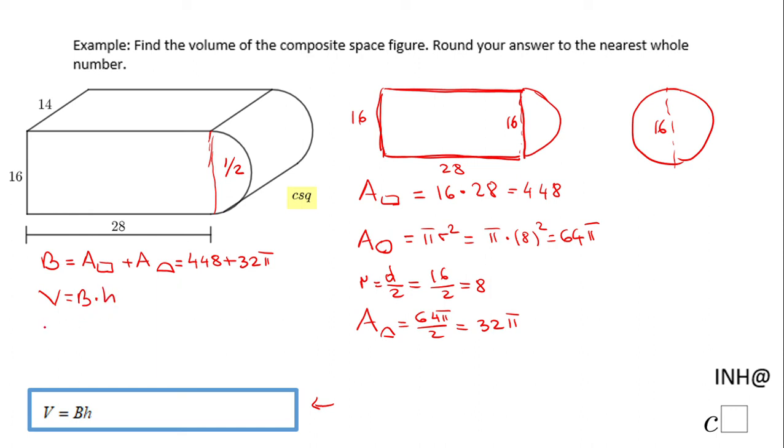In this case, we're going to have 448 plus 32π times the height, and be careful, the height is 14. This is a sleepy prism, if you want to call it like that, the height is 14. So now I can get a calculator and do this math.